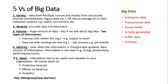And then number five is value — how useful and valuable is the information to your organization. We're trying to bring it down to three things: how we can use information to do predictive forecasts, how this information affects our revenue, and the types of analytics we can do to help us make better decisions. So those are the five Vs of big data. When we talk about big data, we're thinking about things like enterprise data, transactional data, social media activities, public data, archives — it's huge.